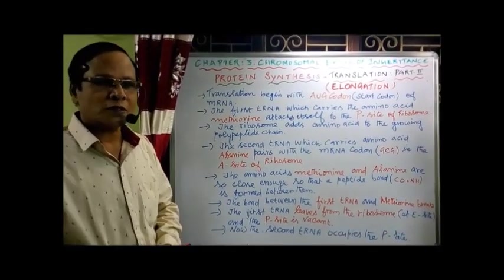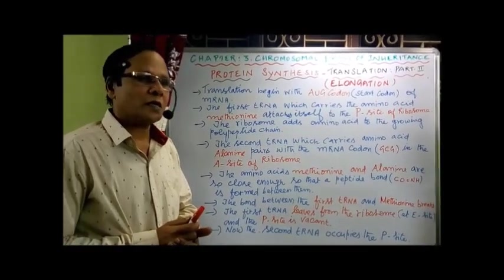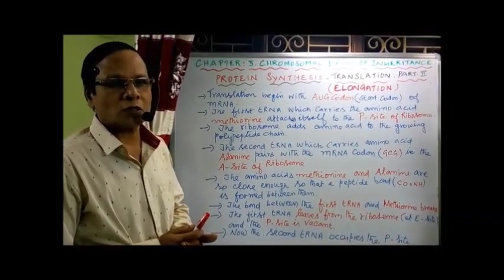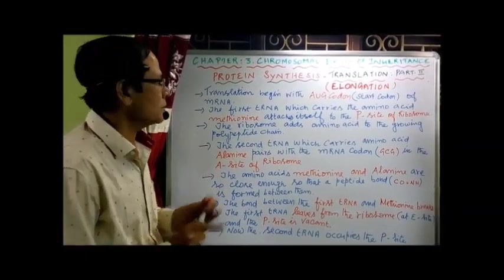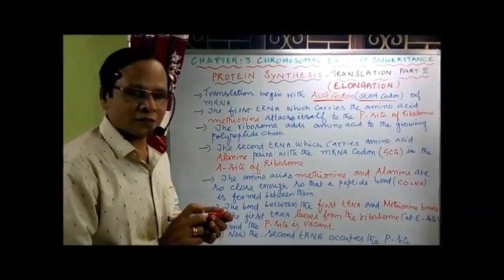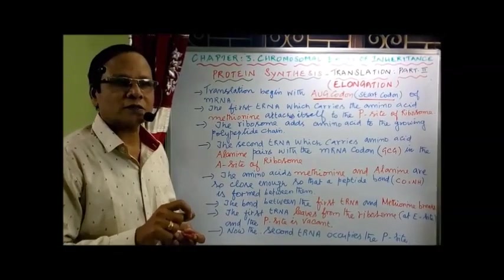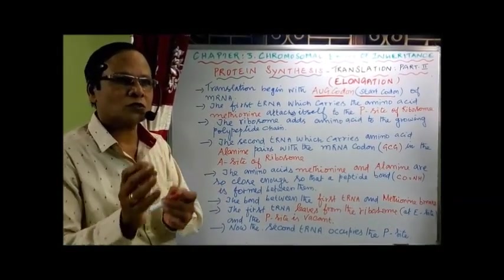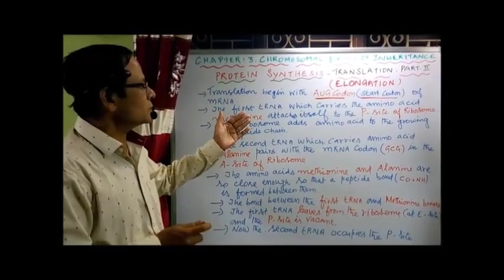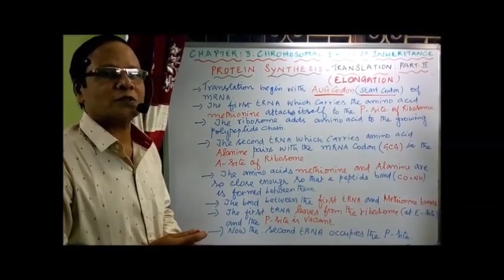So what is elongation? It is nothing but the formation of a polypeptide chain. The process of Translation begins with the AUG Codon, which is the start codon of mRNA. The tRNA translates the information present in the Nucleic Acid into amino acid sequence — that is, from gene to protein. The translation process begins with the AUG Codon, the Initiation Codon, the Start Codon, coding for amino acid methionine.